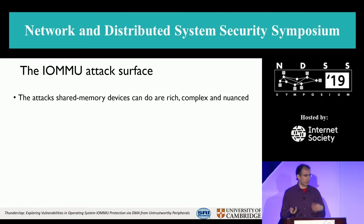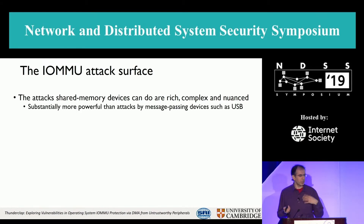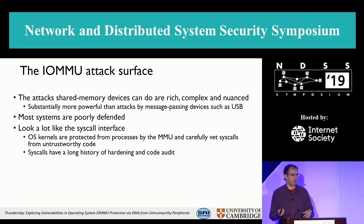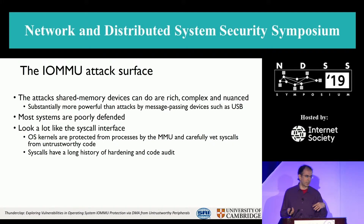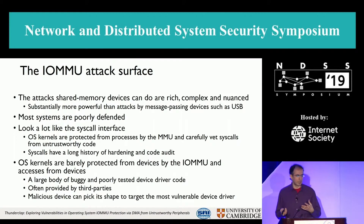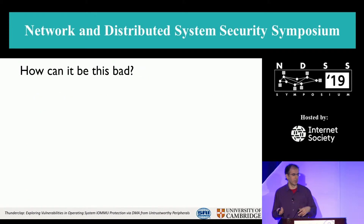We've shown that the IOMMU attack surface is more rich, complex, and nuanced than was previously thought — much more powerful than attacks such as USB — and the defenses are really not good. This looks a bit like the system call interface, where programs make calls to the kernel, which has been fairly well hardened and audited. But operating system kernels haven't really thought about malicious devices, so there's lots of buggy device driver code running in the kernel parsing data coming from devices, and we can pick the most vulnerable device driver.